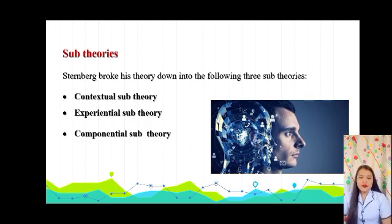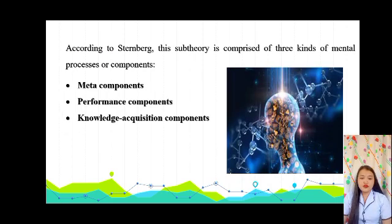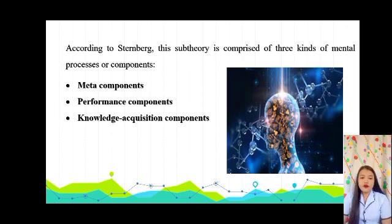The third sub-theory is the Componential sub-theory. The Componential sub-theory outlines the various mechanisms that result in intelligence. According to Sternberg, this sub-theory is comprised of three kinds of mental processors or components: meta-components, performance components, and knowledge acquisition components.